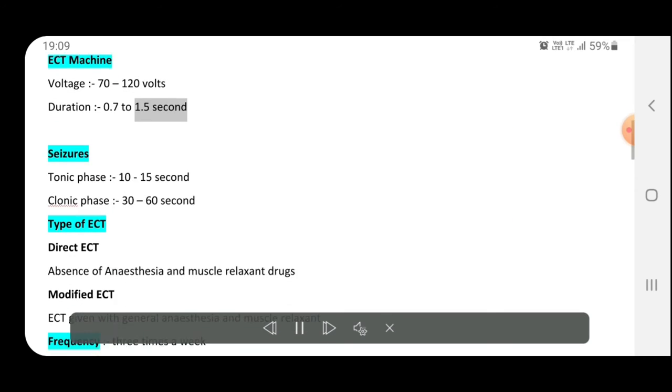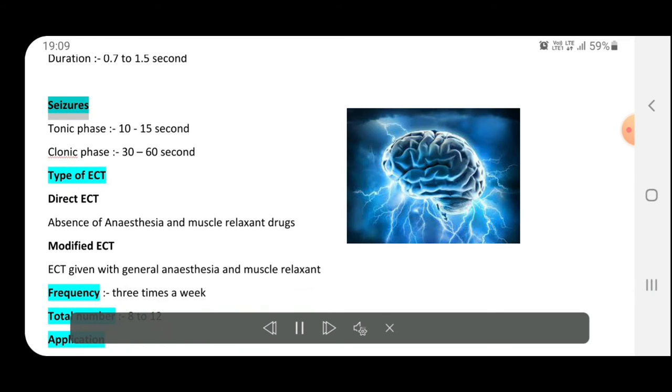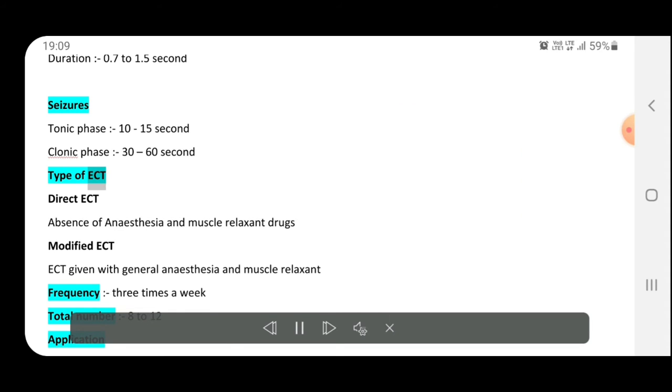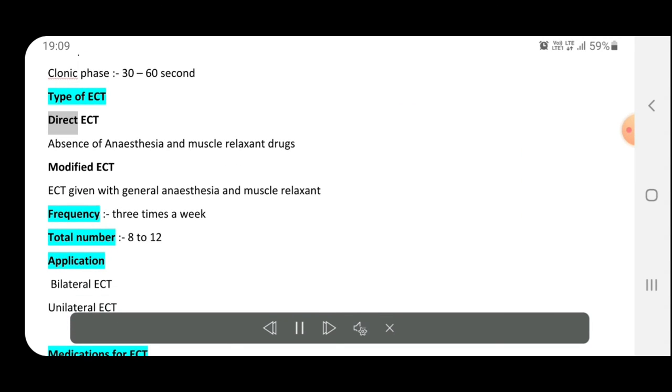Seizures: tonic phase 10 to 15 seconds, clonic phase 30 to 60 seconds. Type of ECT: direct ECT